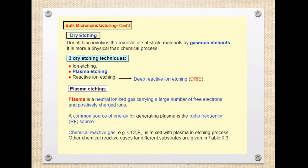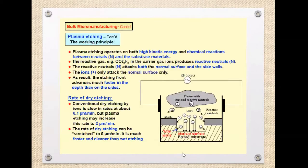This process involves a chemically reactive gas such as CCl2F2 introduced into the plasma. The gas contains ions and has its own carrier gas. The plasma consists of ions and reactive neutrals, along with free electrons and charged ions.